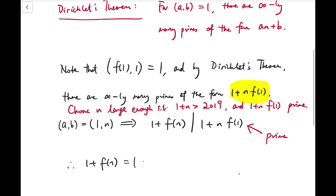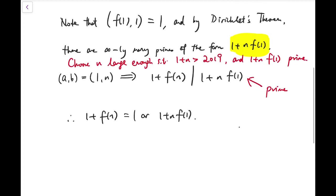So because this is prime, so we know that 1 plus f of n is either 1 or 1 plus n times f of 1. But 1 plus f of n surely cannot be 1 because f of n is positive. So we must have this. So f of n equals n times f of 1.